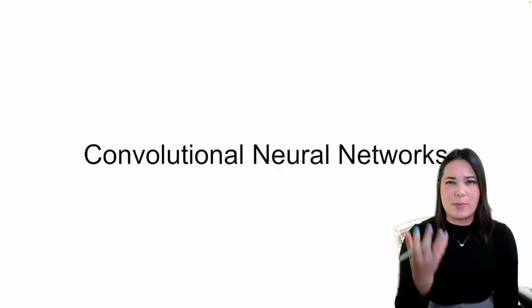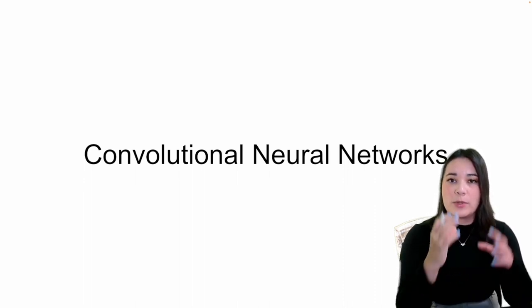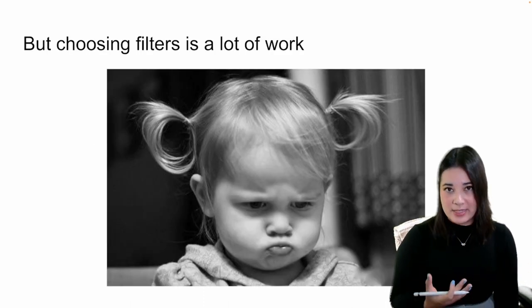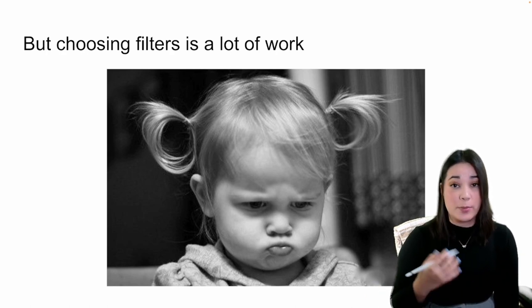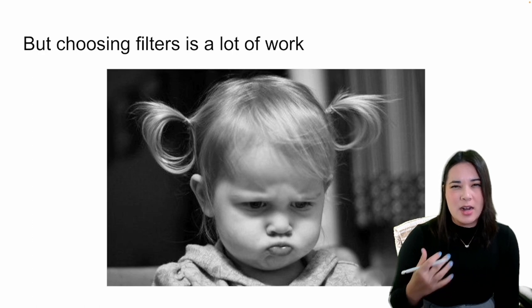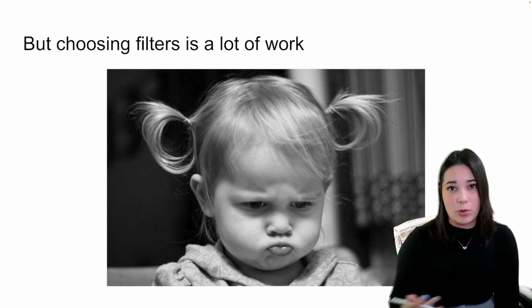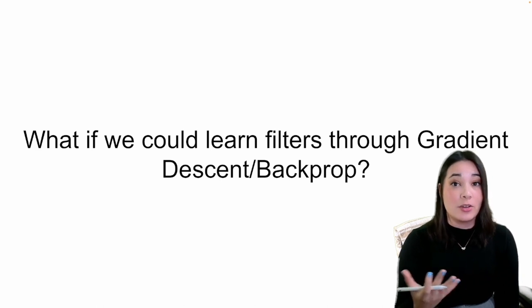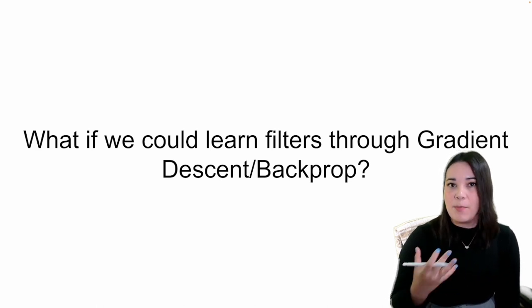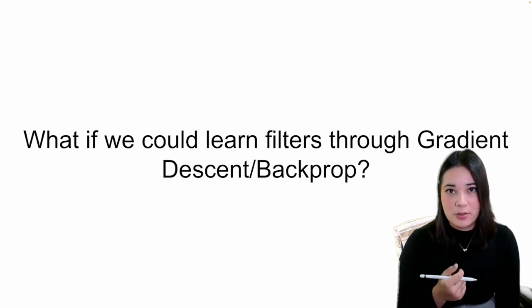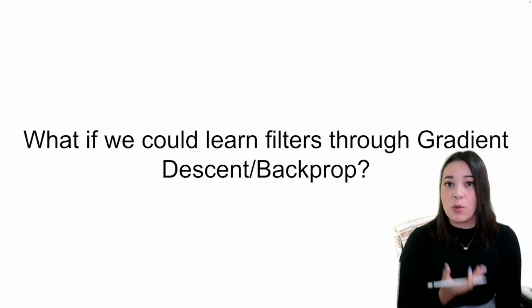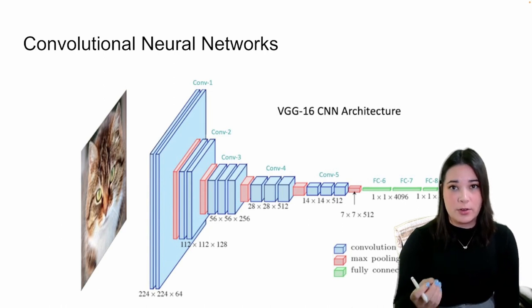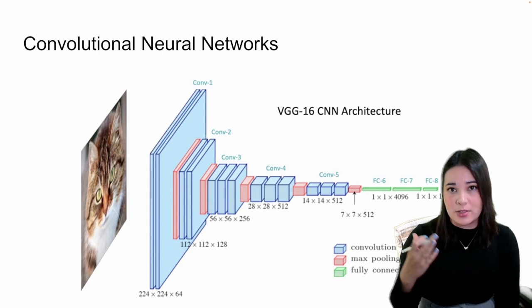So we've talked about applying filters to images using convolution, where we take a filter and slide it across our image to get our output. But what does that have to do with neural networks? In the previous examples, I showed some very simple filters that could be used to process an image, but it's not really easy to choose what filters you might need to classify images. So what if we let our neural network choose by using gradient descent and backpropagation to learn the weights — the numbers in the filter — that will create the filters needed to accomplish our task?